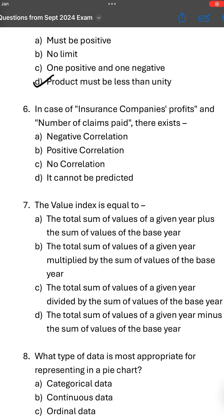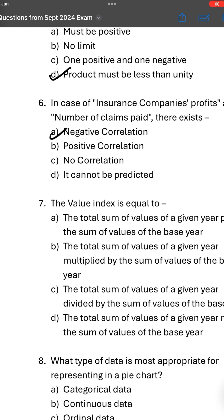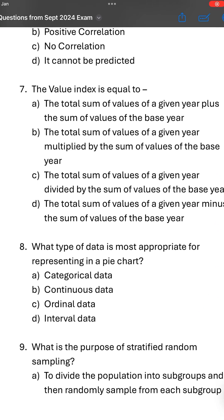In case of insurance companies, profits and number of claims paid - there exists what correlation? If claims increase, if they pay more claims, their profit will obviously reduce. So it is a negative correlation. One increases, other decreases.